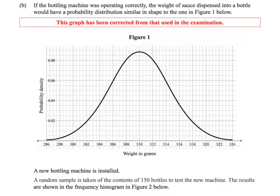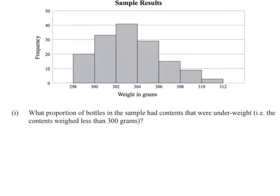So now they've gone away and they have a new bottling machine, and they've taken a random sample of 150 bottles, and they have the graph that is shown here. So this is the actual sample with our 150 bottles that they did.